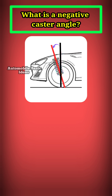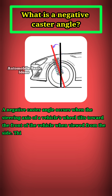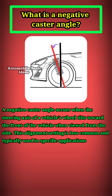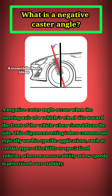What is a negative caster angle? A negative caster angle occurs when the steering axis of a vehicle's wheel tilts toward the front of the vehicle when viewed from the side. This alignment setting is less common and typically used in specific applications, such as certain types of forklifts or specialized vehicles, where maneuverability at low speeds is prioritized over stability.